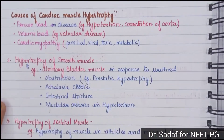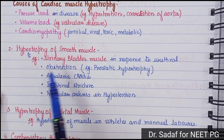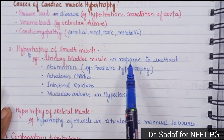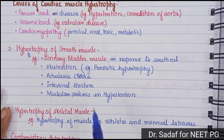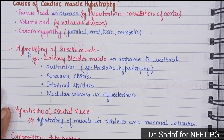A second example of pathological hypertrophy is hypertrophy of the smooth muscle. For example, the urinary bladder muscle undergoes hypertrophy in response to urethral obstruction — for example, in prostatic hypertrophy. The answer to what type of change occurs in the urinary bladder muscle in obstruction is hypertrophy.